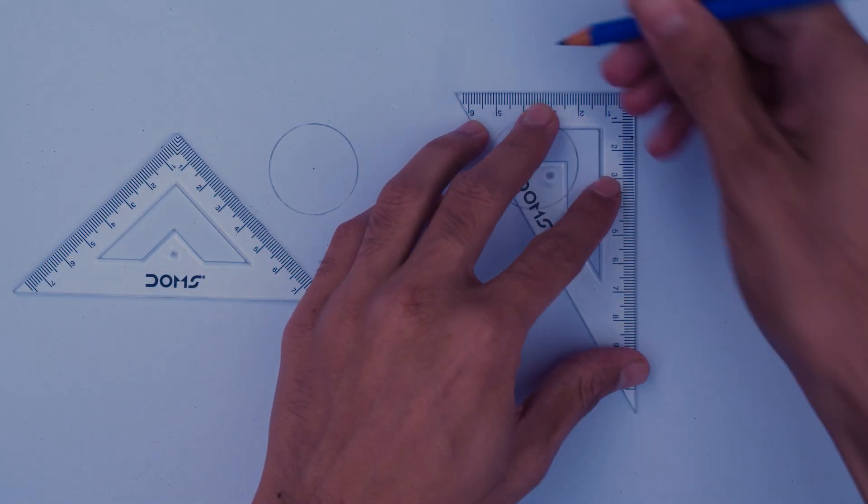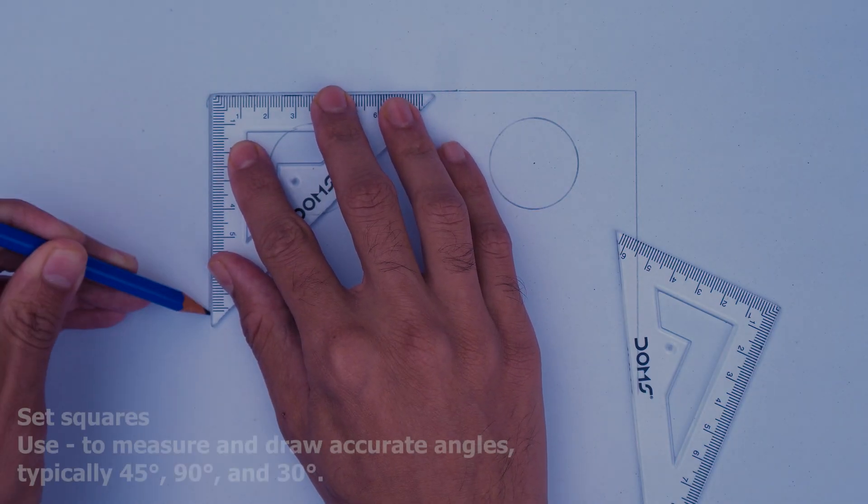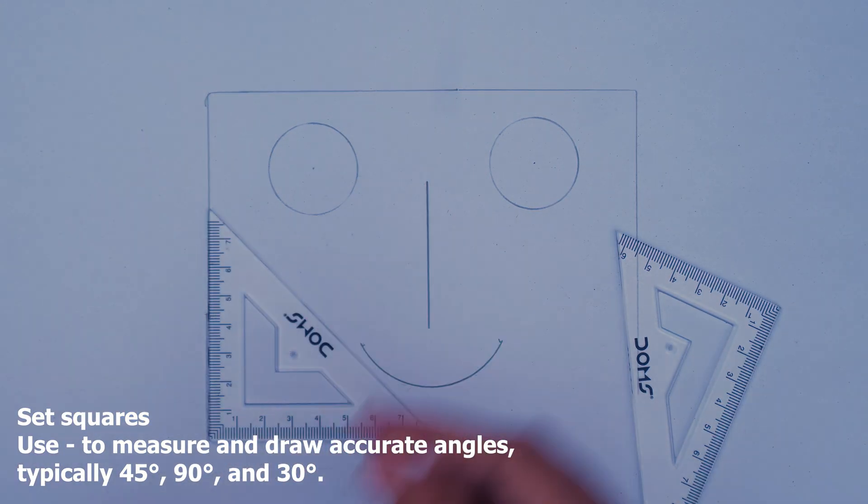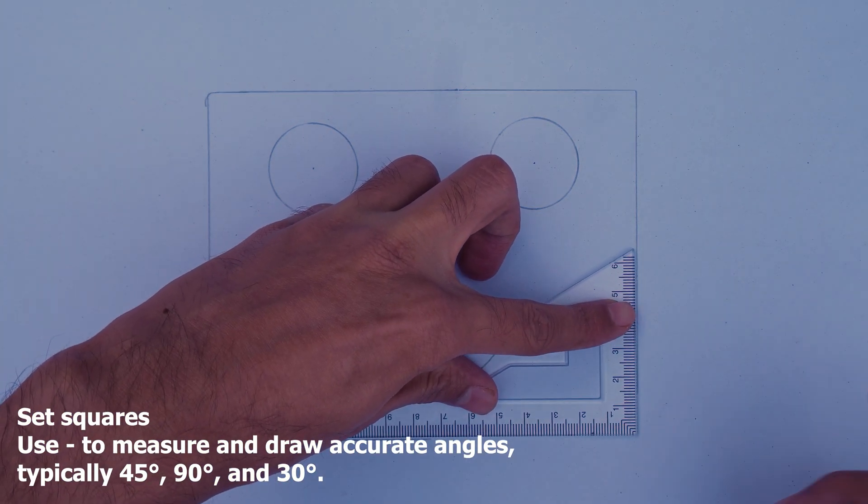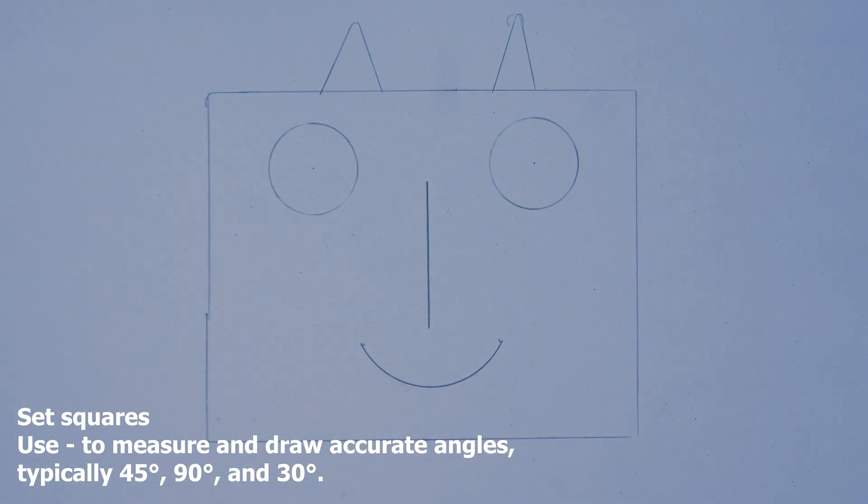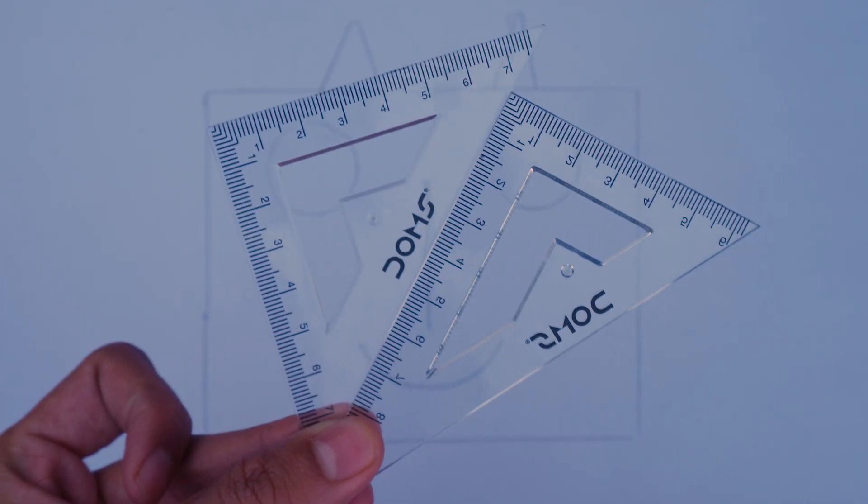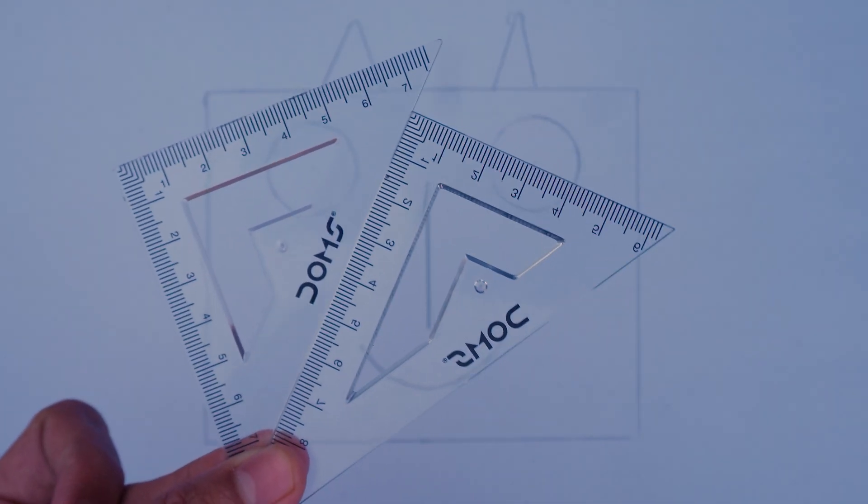These triangular things which we didn't even know existed are known as set squares. Their main job is to help us draw some specific angles very quickly. And those angles are 90 degree angle, 45 degree angle, and 30 degree angle.